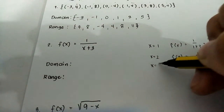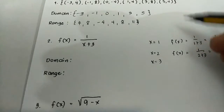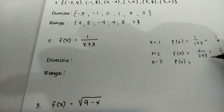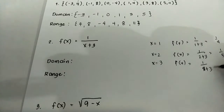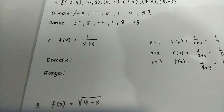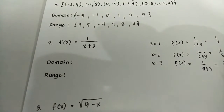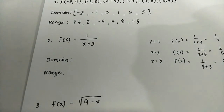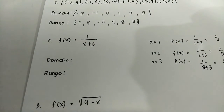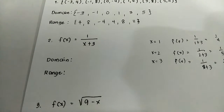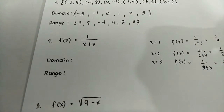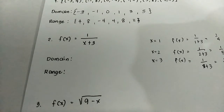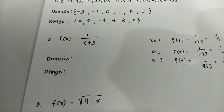Let us try x equals three: f(x) equals one over three plus three, that is one over six. What if we try negative numbers? If x equals negative one, one over negative one plus three is one-half. If x equals negative two, one over negative two plus three equals one over one, which is one. Let us try negative three.